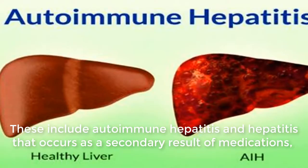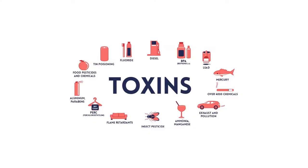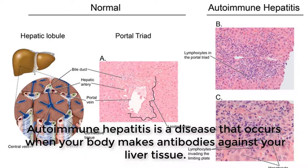These include autoimmune hepatitis, hepatitis that occurs as a secondary result of medications, drugs, toxins, and alcohol. Autoimmune hepatitis is a disease that occurs when your body makes antibodies against your liver tissue.